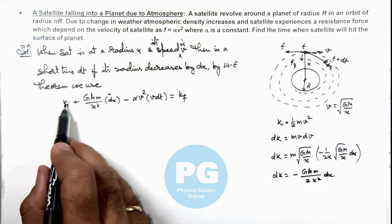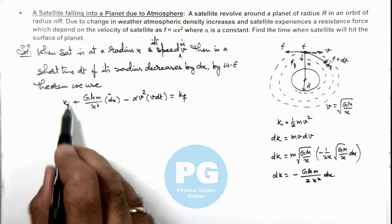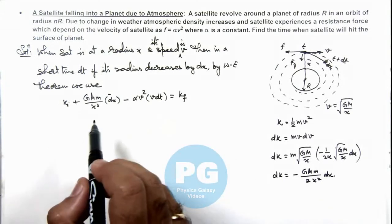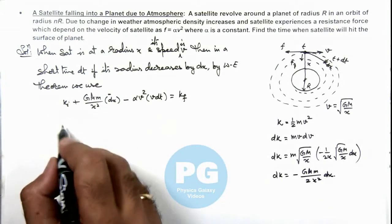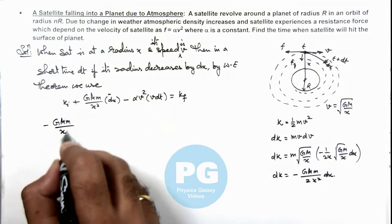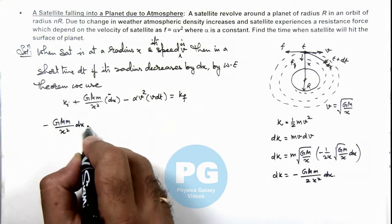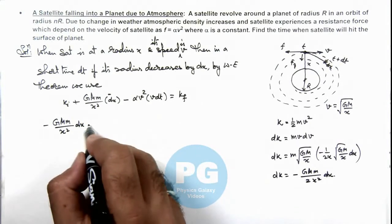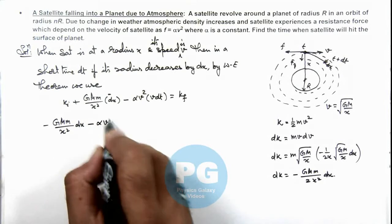So if we substitute the value of dk by taking this initial kinetic energy on the other side, this becomes -GMm/x² dx, and in this situation this -α v³ dt is equal to.